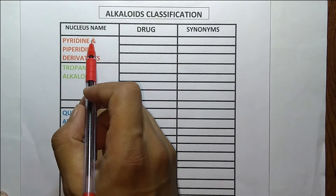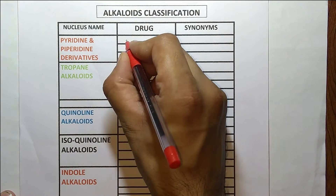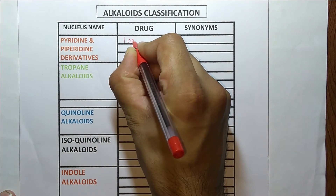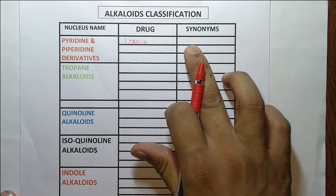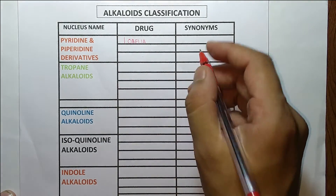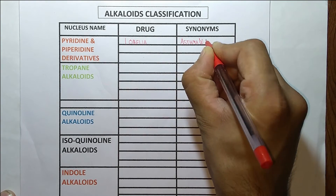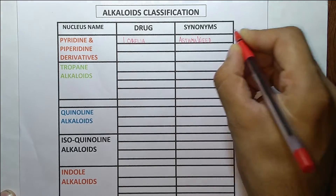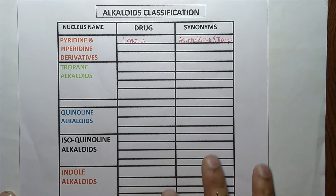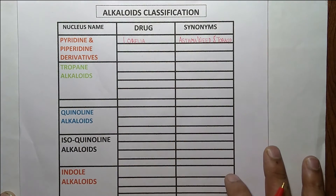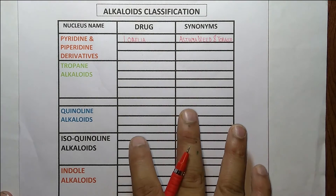First is pyridine and piperidine derivatives. The drugs included in this are lobelia — the synonym name of lobelia is 'asthma weed' — and tobacco. Students, please try to note down these drug names with their synonyms and nucleus name, because questions may be asked directly from this portion.